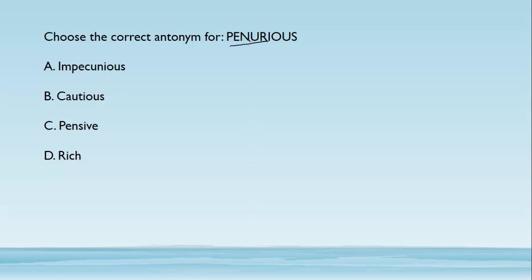Choose the correct antonym for 'penurious.' Penurious means very poor, having no money — penniless. The correct antonym is someone who has lots of money and wealth, so the answer is 'rich.' 'Impecunious' also means very poor, without any money — do remember this word. 'Cautious' means very careful, and 'pensive' means someone who is in deep thought, very thoughtful.